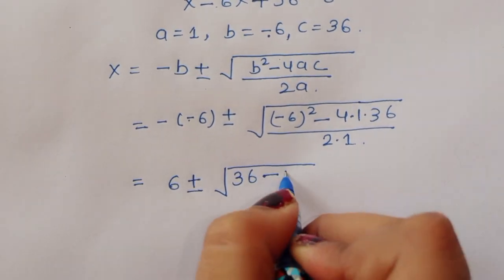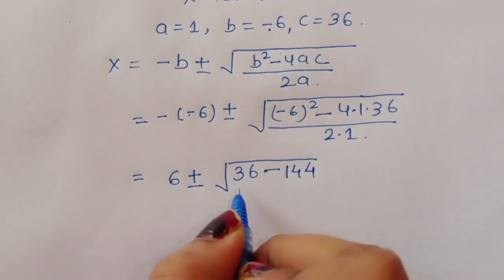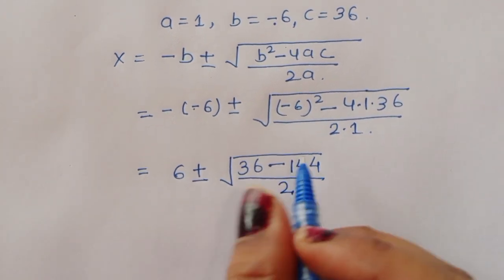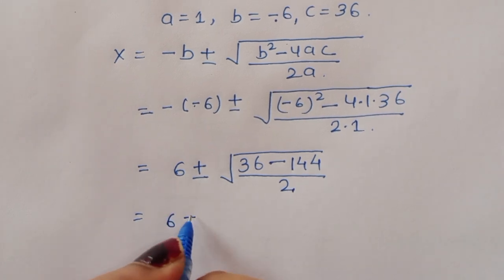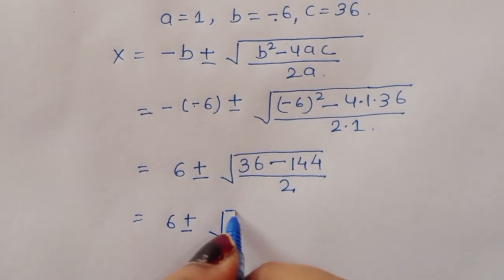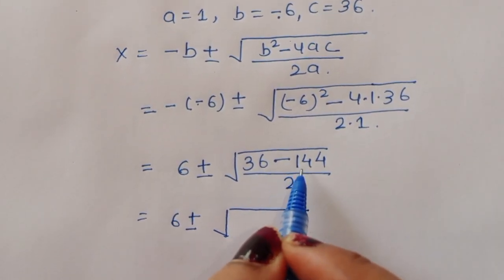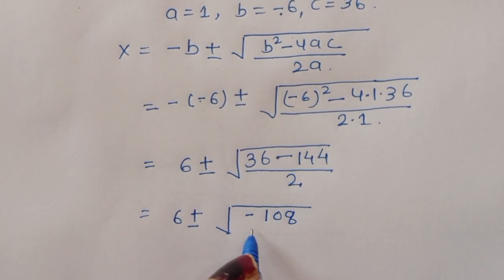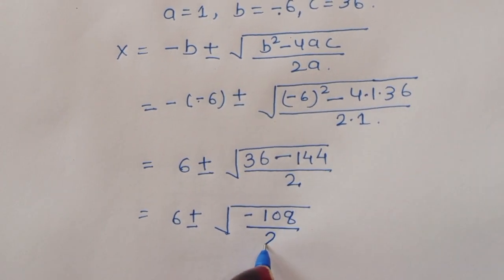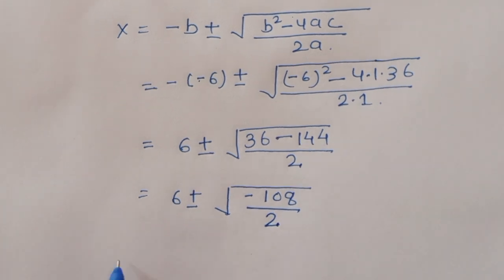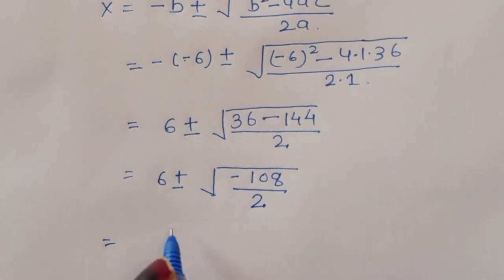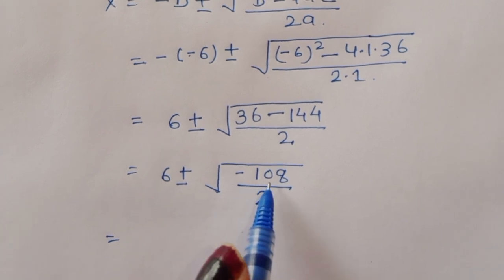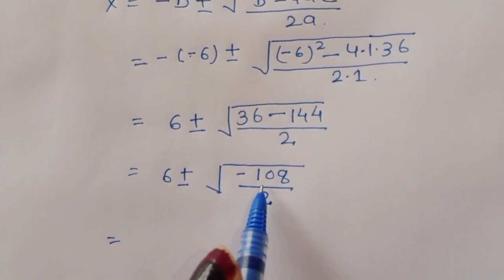So we have: 6 plus or minus the square root of (36 minus 144) divided by 2, which gives 6 plus or minus the square root of minus 108, divided by 2. Now we need to factor minus 108 under the square root.